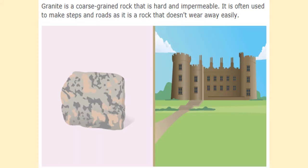Granite is a type of igneous rock. It has crystals inside it, it is hard and it is impermeable — so it doesn't let water through it. It is often used to make steps and roads as it is a rock that doesn't wear easily. Also there are certain countries, including Scotland, where granite is a common type of rock, and so because there's a lot of it around and it's hard and impermeable, it has been used to make buildings and castles.